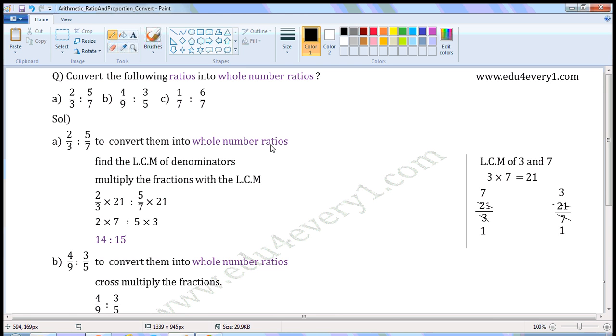To convert them into whole number ratios, find the LCM of the denominators. Here the denominator is 3, here the denominator is 7. So find the LCM of 3 and 7.